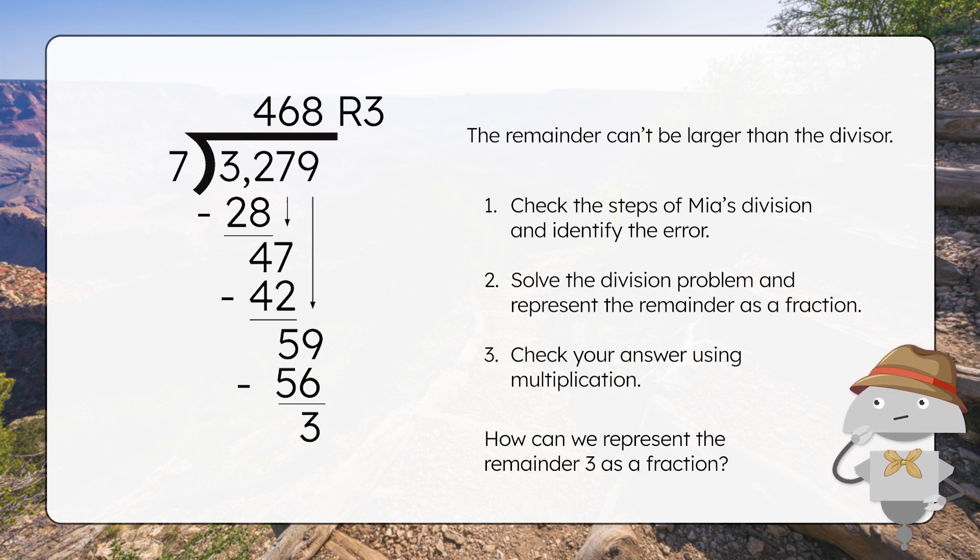How can we represent the remainder 3 as a fraction? 3 will be the numerator. And what will the denominator be? We use the divisor. So 7. That gives us the fraction 3 7ths.